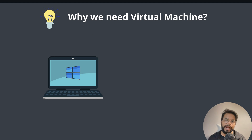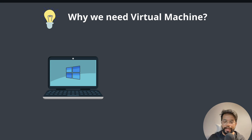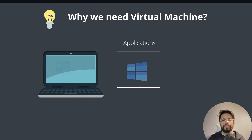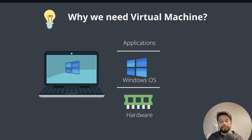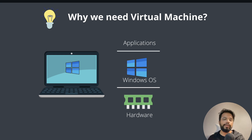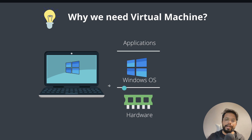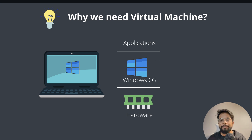Let's first understand the structure of your normal machine or normal computer. Suppose you have a laptop which consists of different components — hardware, which includes the CPU, the RAM, memory, etc. On top of your hardware you have an operating system, which may be Windows or macOS, and on top of your operating system you are using many applications of your choice. This is the normal structure.